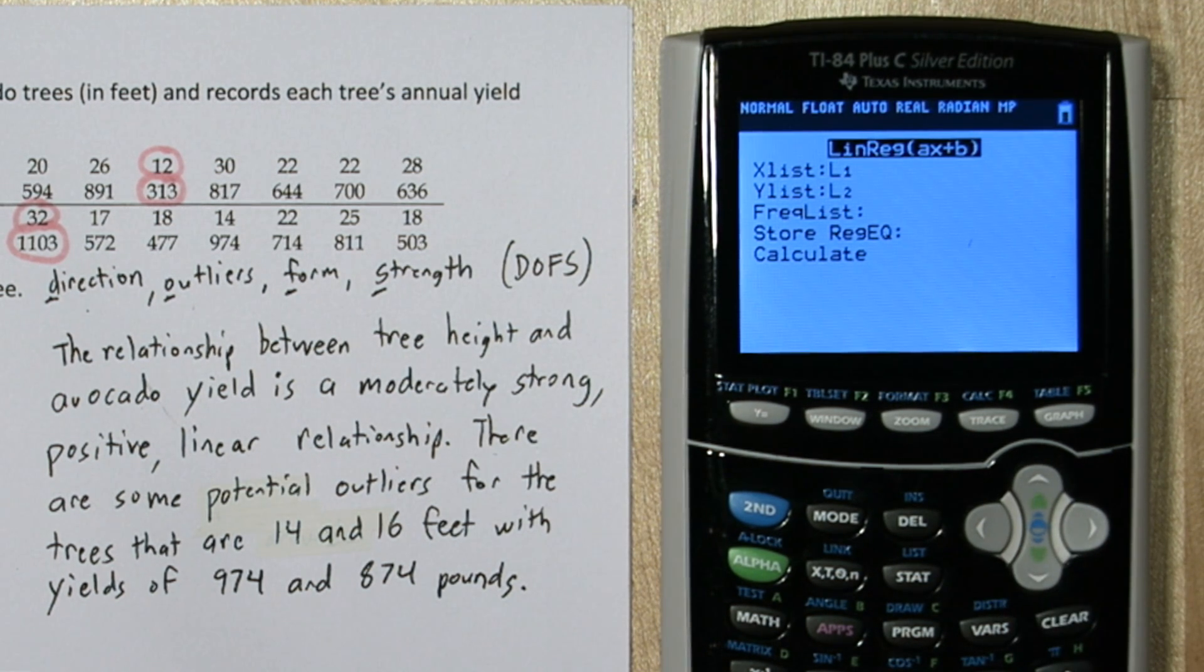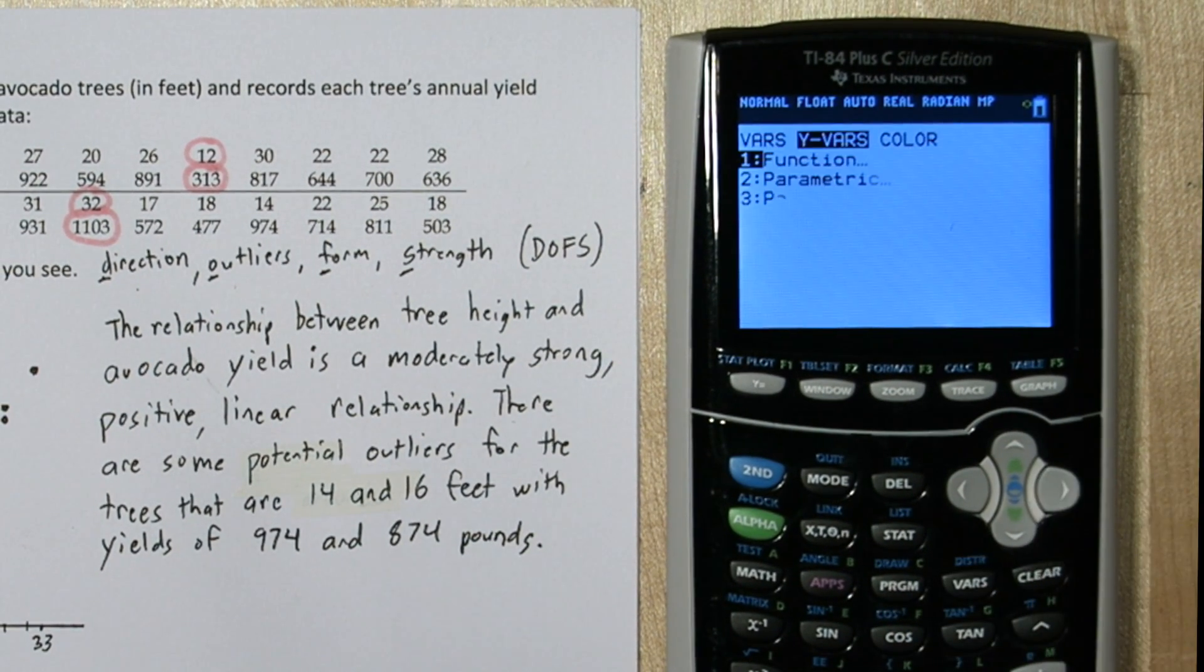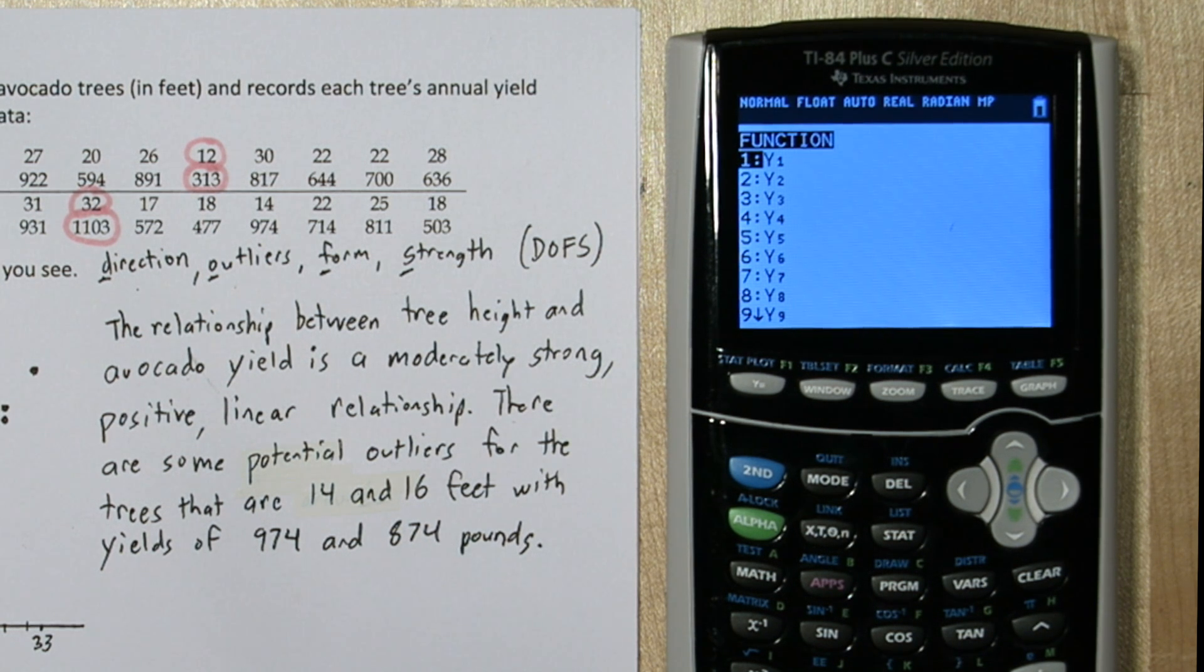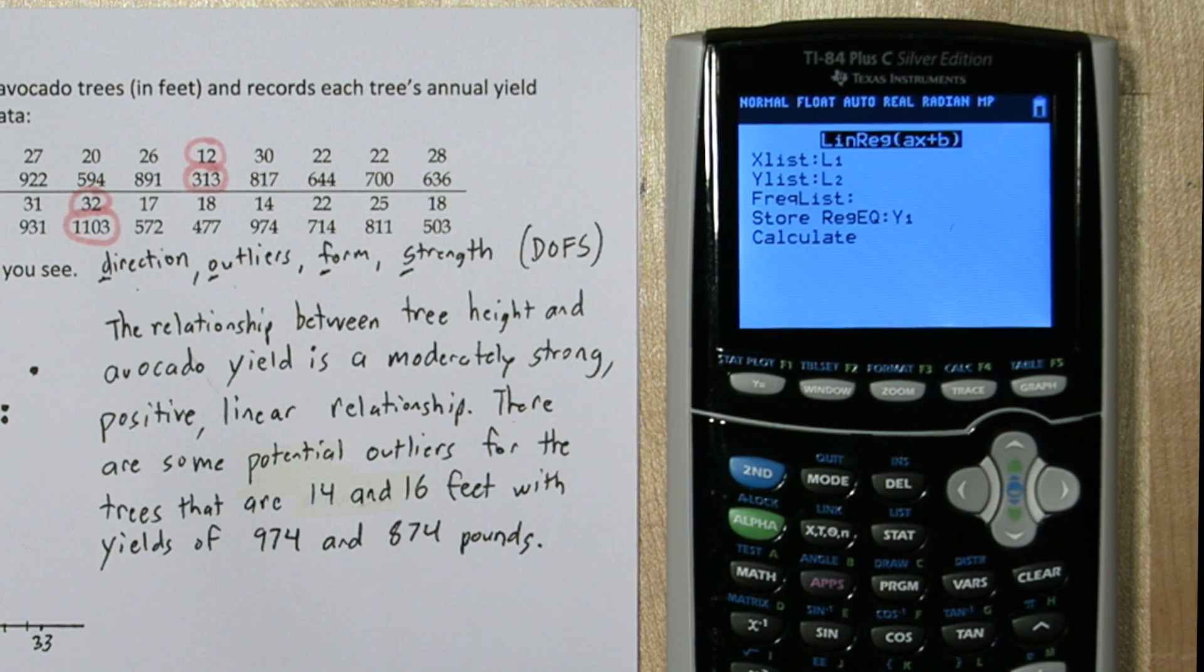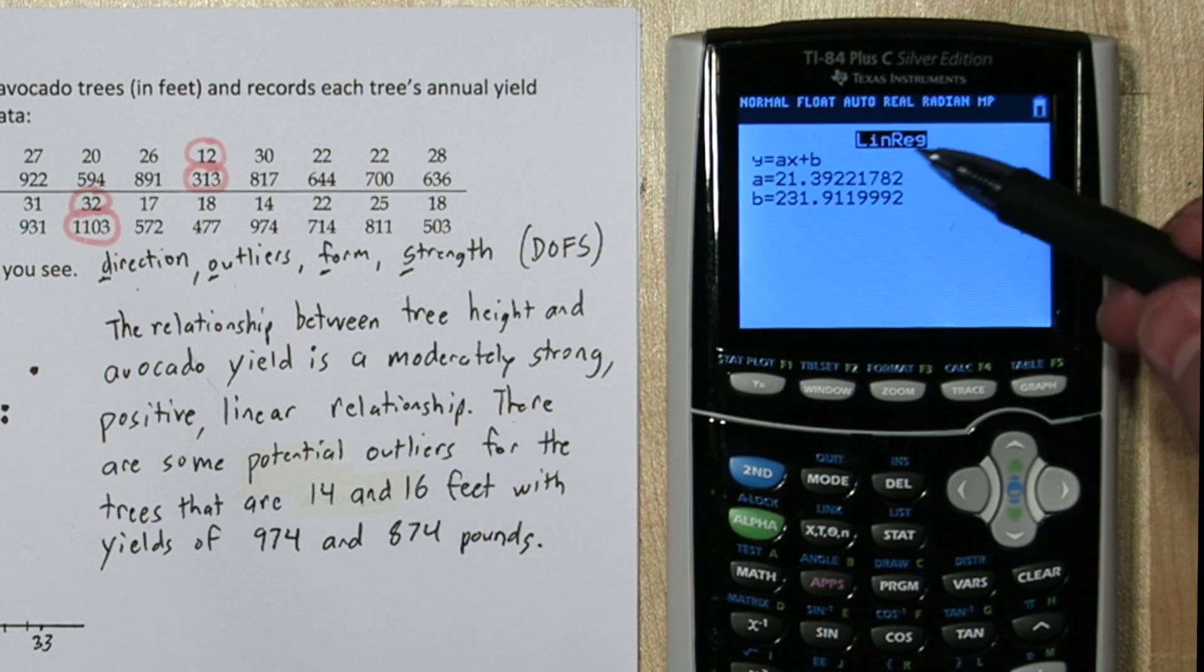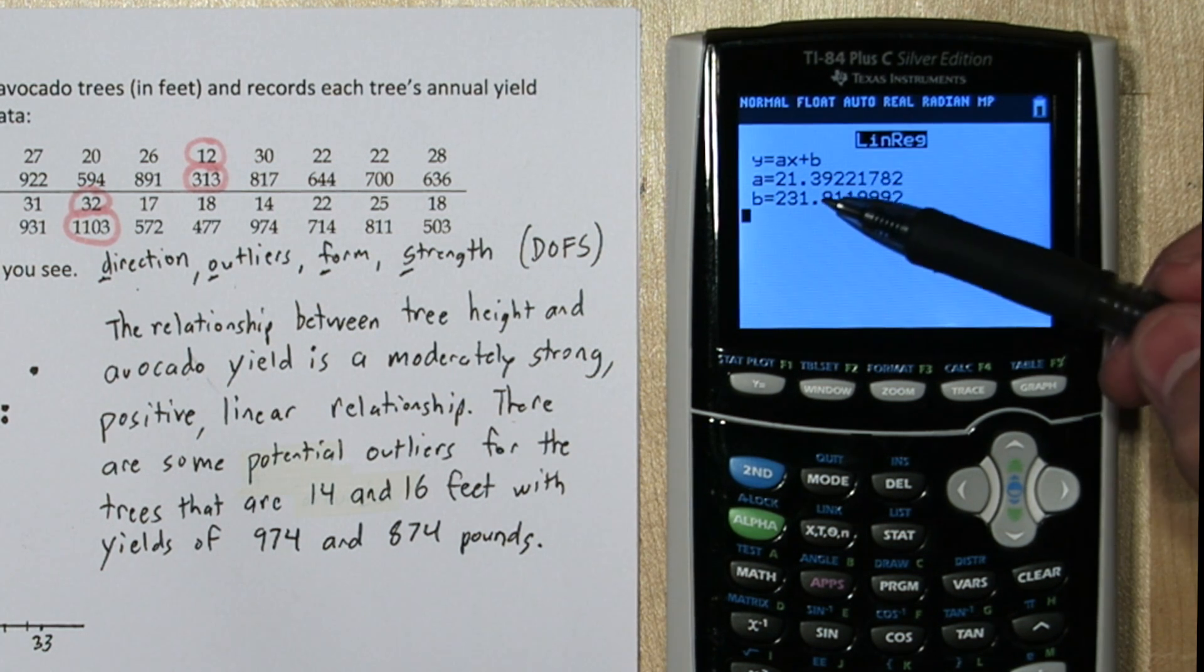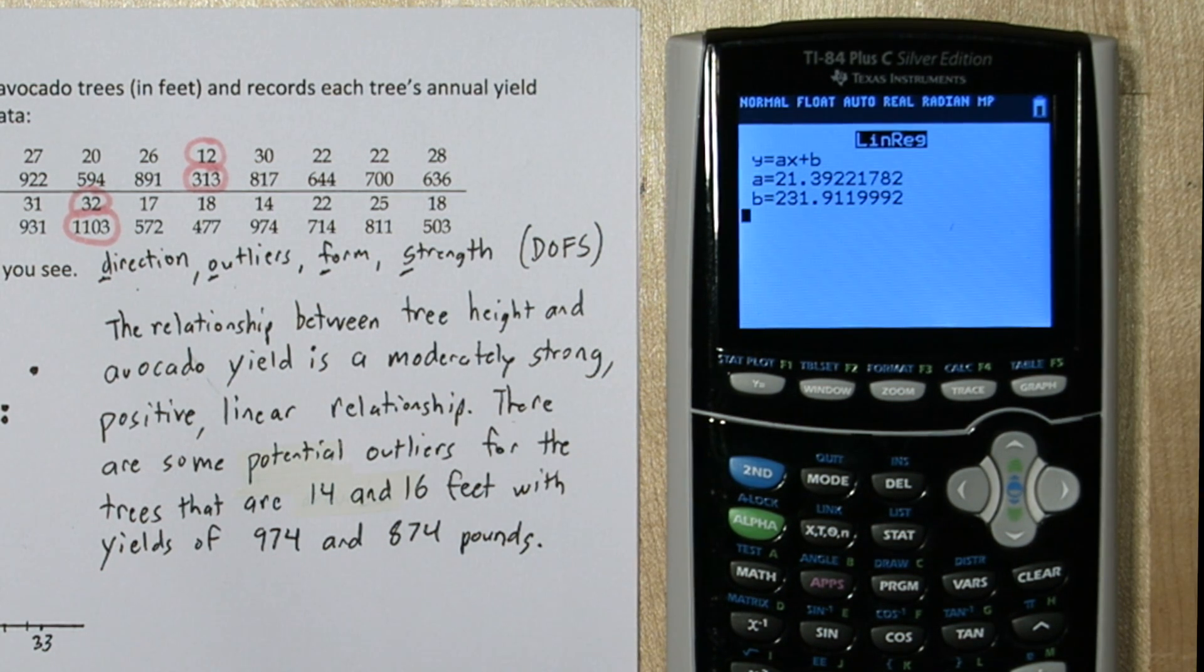Now where it says store regression equation, if you press the vars button, and you go over to y vars, and then press enter on function, and enter again on y sub 1, it's going to store our regression equation in y1. Here's our regression equation, so our slope is 21.4 approximately, and our y intercept is 231.9 approximately.